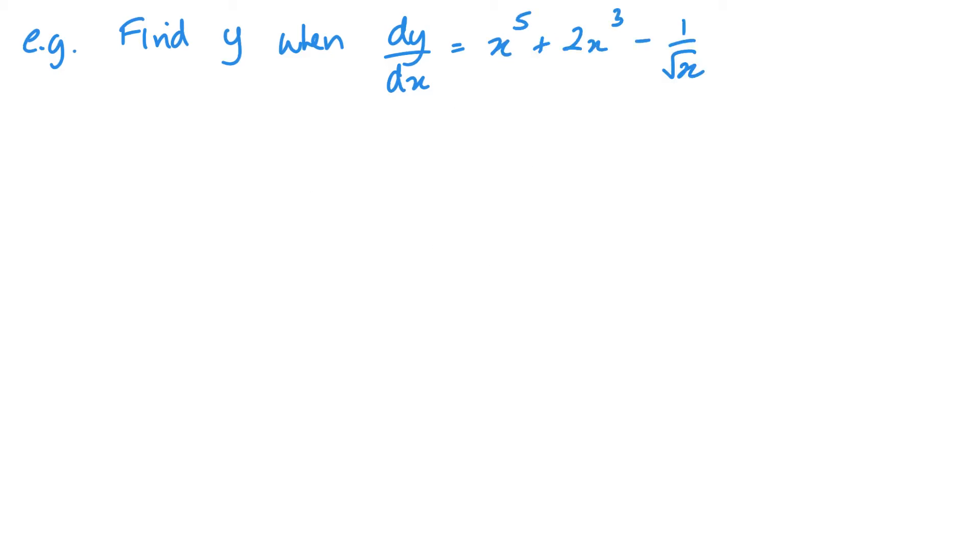Next example, find y when dy by dx equals x to the power of 5, plus 2x cubed minus 1 over root x. So, the first thing I want to do is just deal with that 1 over root x. Just like when you differentiate, you want to make sure everything's on the top in a form that you can use. So, we want it in terms of an indice. So, that is my dy by dx.